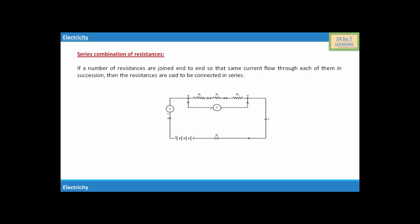You can see here in this diagram three resistances R1, R2, and R3 are connected in series between two points X and Y. Suppose a current I flows through the circuit when a cell of voltage V is connected across the combination.